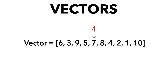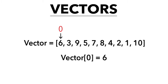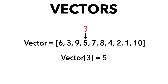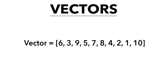So index zero would be here, then index one, then two, then three, then four — depending on how big your vector is, it can have as many values as you want. This one in particular has ten values. If you wanted to get a number from a vector, you'd need the index of that number. So vector index zero would equal six, index one would equal three, index two would equal nine. That's the confusing part — the index number is not the value, it's the position in the vector.